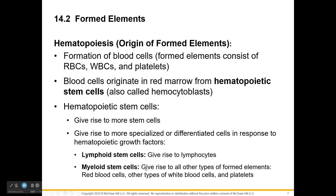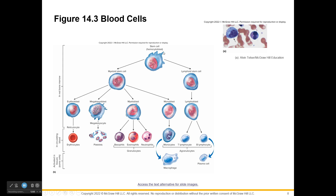Myeloid stem cells give rise to red blood cells, platelets, and the other white blood cells — neutrophils, monocytes, and similar cells. The hematopoietic stem cell divides; some differentiate into myeloid stem cells, some into lymphoid stem cells — all happening in the bone marrow. Lymphoid stem cells produce lymphoblasts, which mature into B lymphocytes and T lymphocytes.